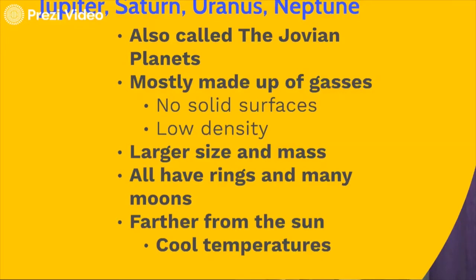These planets are made up mostly of gases. They have no solid surfaces, and they have low density. You can't walk on these planets because they don't have that solid surface — all those gases make up the surface of these planets. When I say low density, I'd like you to think back to your lessons on density and mass. Mass is the amount of space that an object takes up. When we refer to density, we refer to how tightly the molecules are packed inside an object.